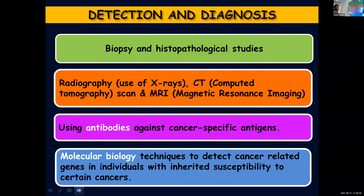As you know, antibodies are specific to each antigen. By using antibodies against cancer-specific antigens, doctors can identify any cancerous growth in the body. Then there are molecular biology techniques, which help in detecting cancer-related genes in individuals with inherited susceptibility to certain cancers. In some cancers, heredity can be a reason — if a particular cancer repeatedly appears in family history, there is susceptibility. Molecular biology techniques can help detect the presence of those cancer-related genes earlier.